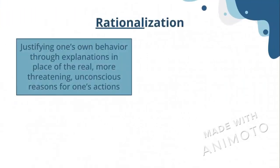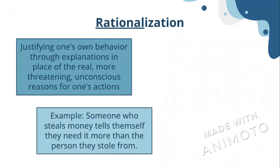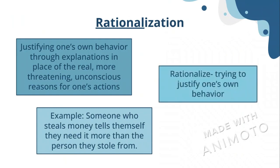Rationalization is justifying one's own behavior through explanations in place of the real, more threatening, unconscious reasons for one's actions. An example is someone who steals money and tells himself they need it more than the person they stole it from. Remembering rationalization is pretty easy — just remember the shorter version of the word, 'rationalize,' which means trying to justify one's own behavior.